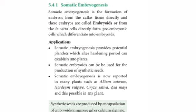After hardening, the somatic embryo can be immediately placed into the field. Somatic embryogenesis can also be used for the production of synthetic seeds and has been demonstrated in plants such as Allium sativum and Oryza sativa, as well as many other plants.